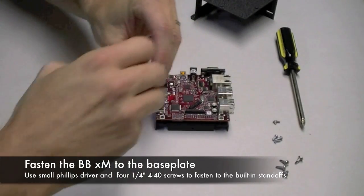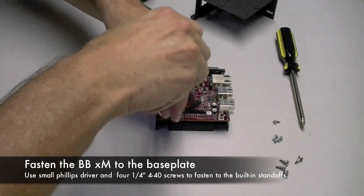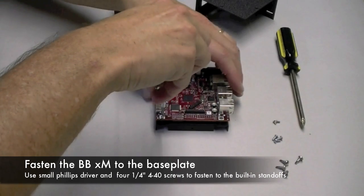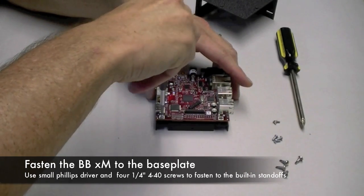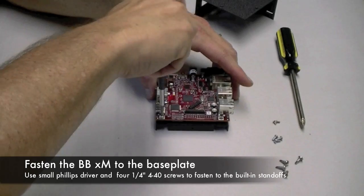Using the small Phillips screwdriver, take the quarter inch 440 screws, there's four of them that come with the kit and begin to mount your BeagleBoard to the built-in standoffs on the base plate.